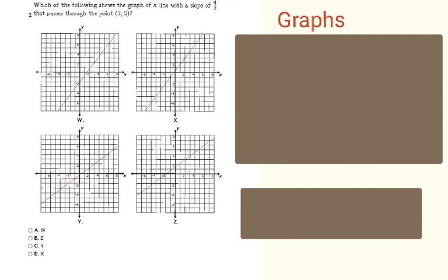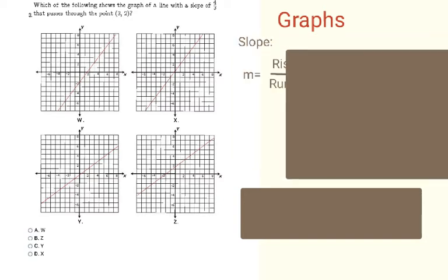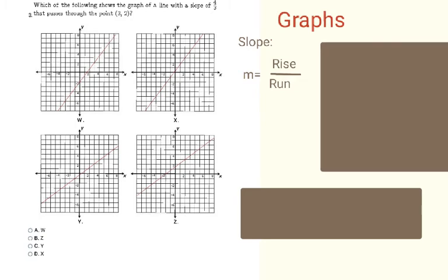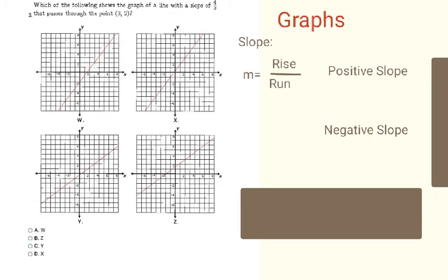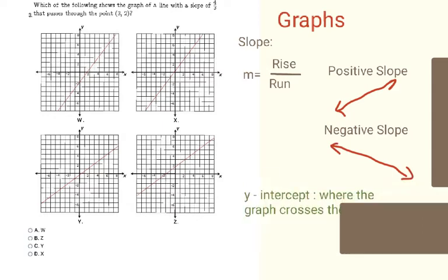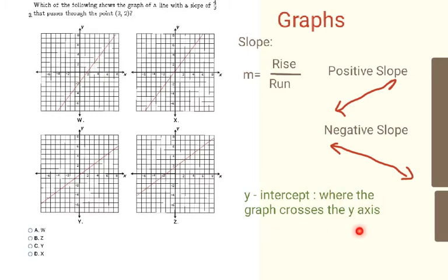Next, you're going to identify the correct graph based on given information. A few notes first: slope is represented by the letter m, and one formula we use is rise over run. Positive slopes are uphill lines and negative slopes are downhill lines. The y-intercept is where the graph crosses the y-axis.